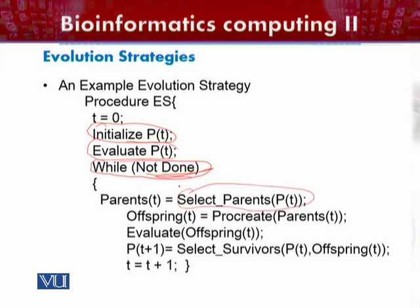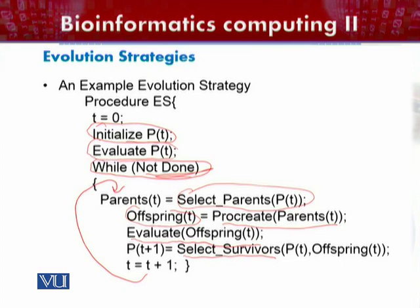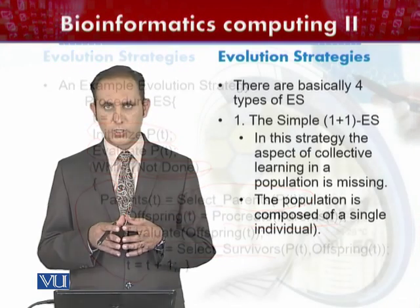Within the loop, parents are selected on the basis of evaluation criteria and the fitness function. Offspring are selected from the parental generation based on the evaluation function and the selection operator. The best-fit individuals survive to the next generation, and the system loops again, repeating all these steps iteratively until the termination criteria is reached and the optimum result is achieved.